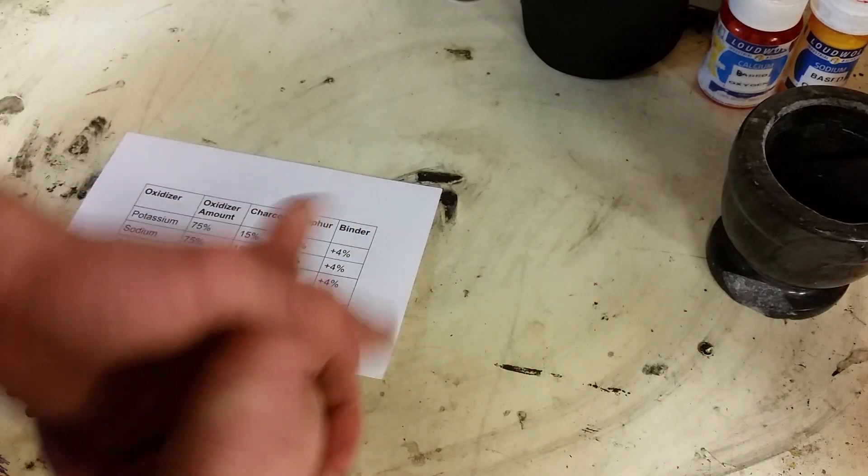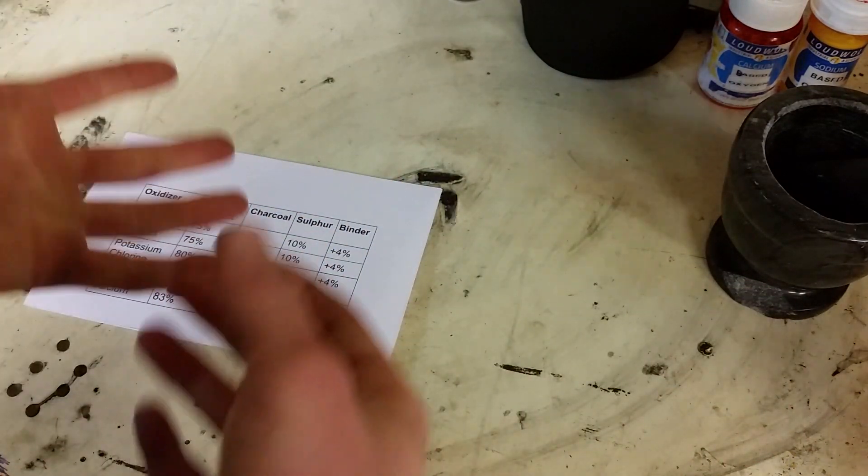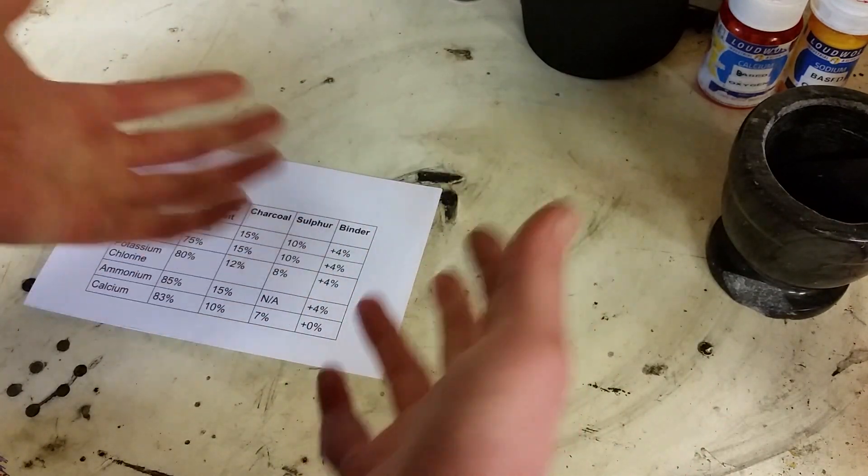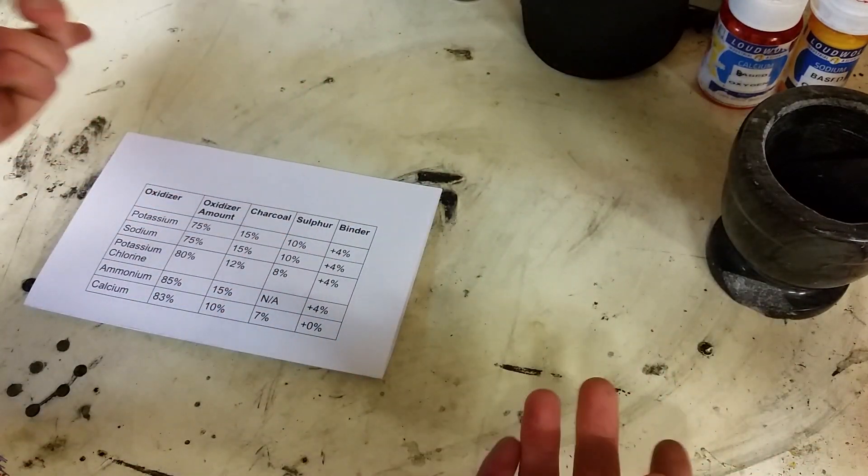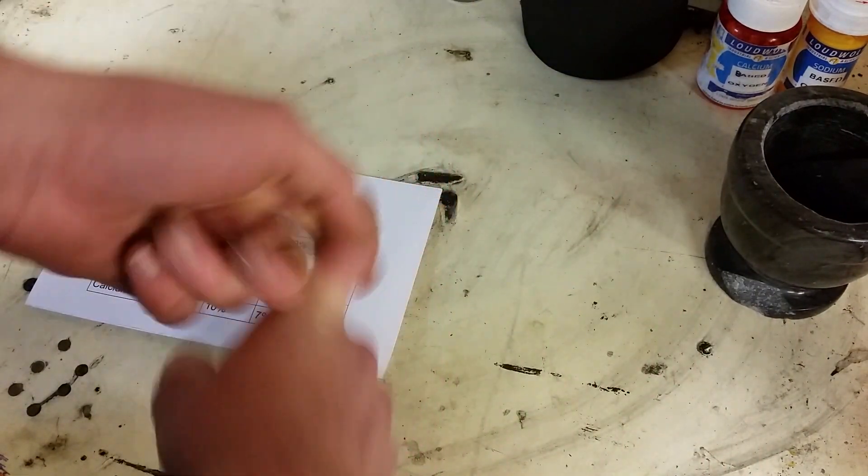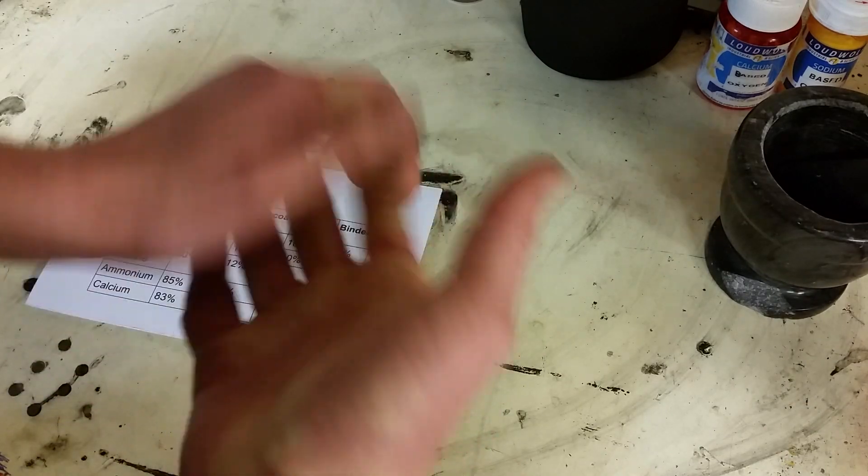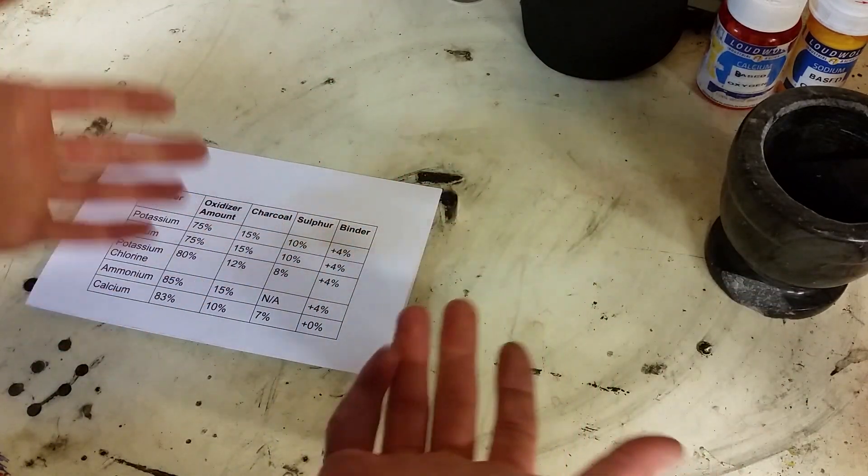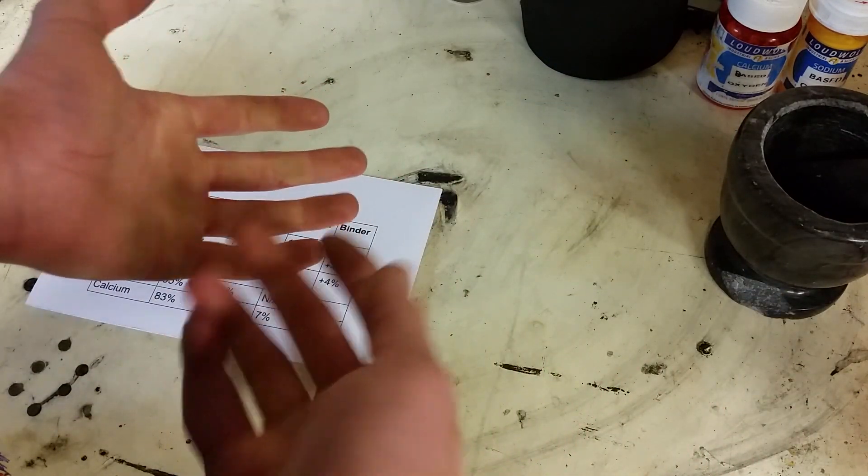Recently one of my favorite YouTubers, ElementalMaker, uploaded a video answering the question what would happen if you made black powder using different sources of carbon. Traditional recipe uses charcoal. He also tried it using activated charcoal and graphite as well. The results were pretty interesting. I started wondering what would happen if you made black powder using different oxidizers.